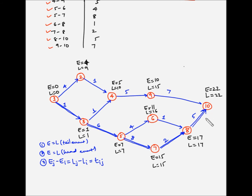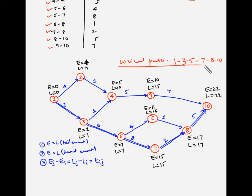Our critical path is 1 → 3 → 5 → 7 → 8 → 10. The latest and earliest occurrence time of event 10 is the 22nd week, so the duration of the project is 22 weeks, which is also the duration of the critical path. Verification: 1 plus 6 equals 7, plus 8 equals 15, plus 2 equals 17, plus 5 equals 22. So the duration of the project is 22 weeks.